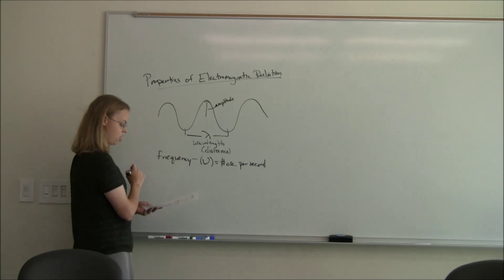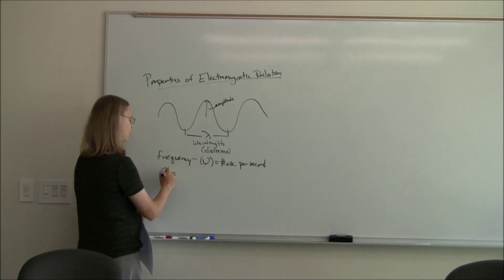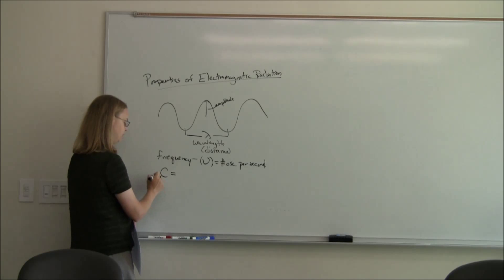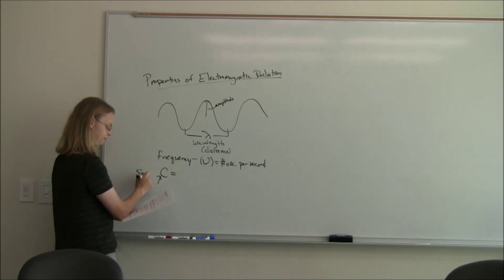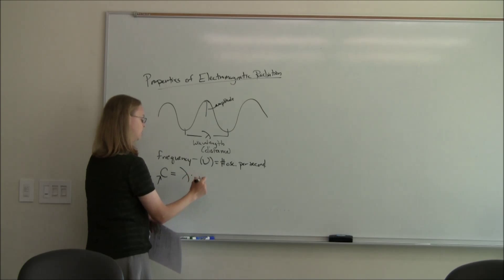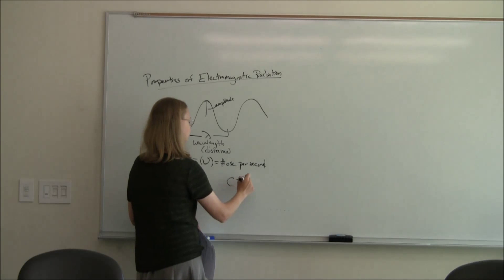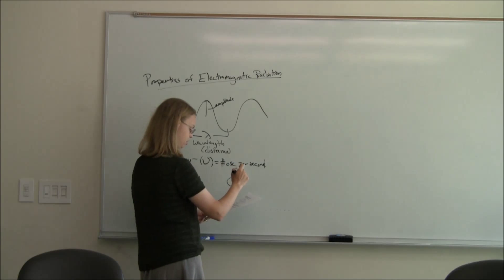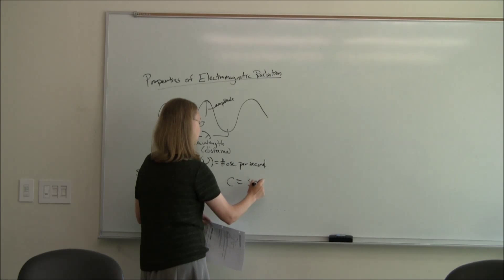And so in a vacuum, then the speed of light would be the wavelength times the frequency. And in a vacuum, c is equal to about 3 times 10 to the 8 meters per second.